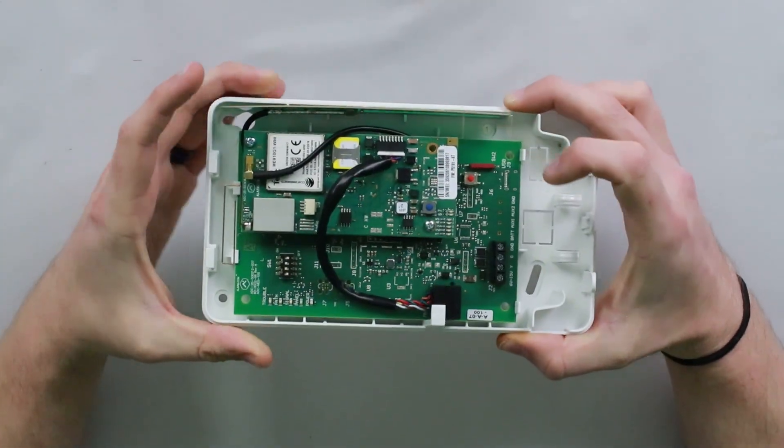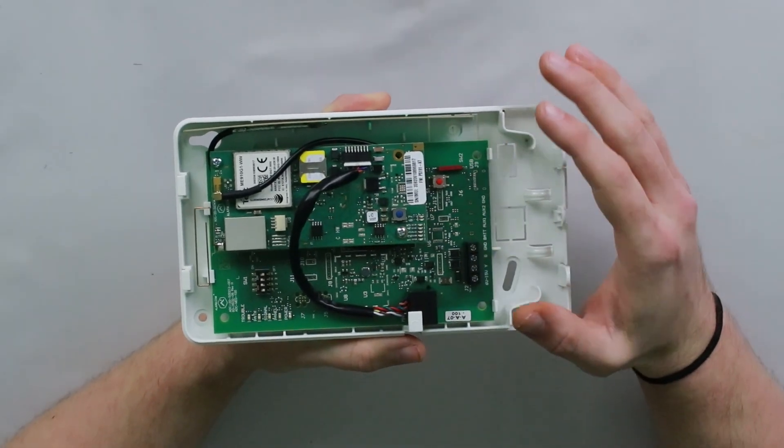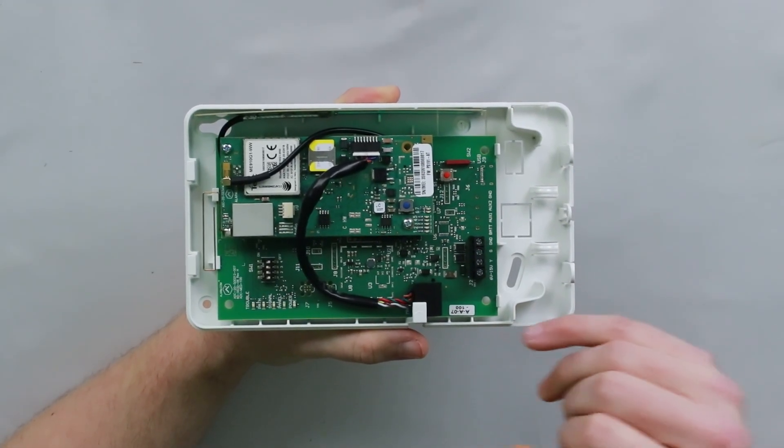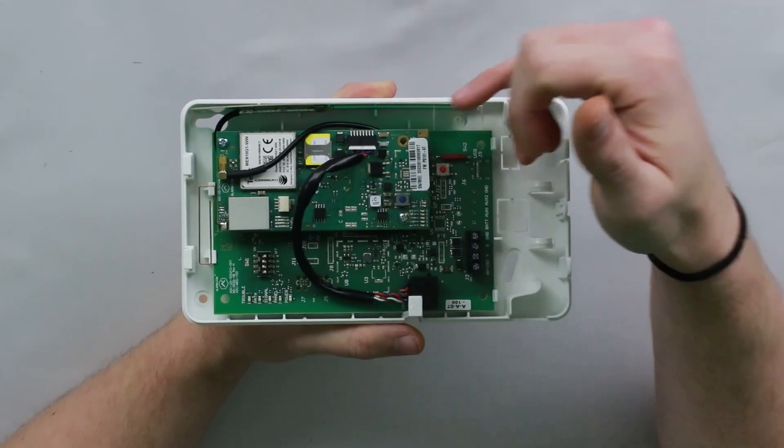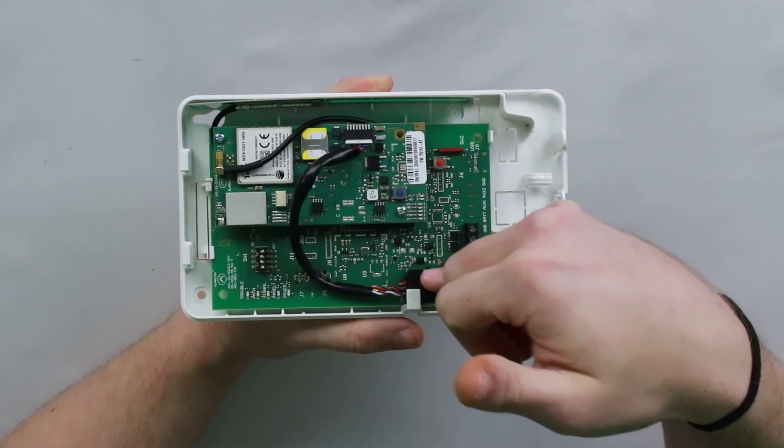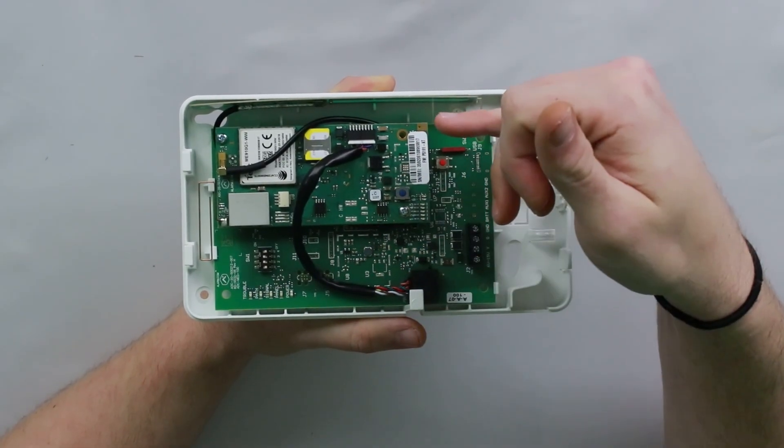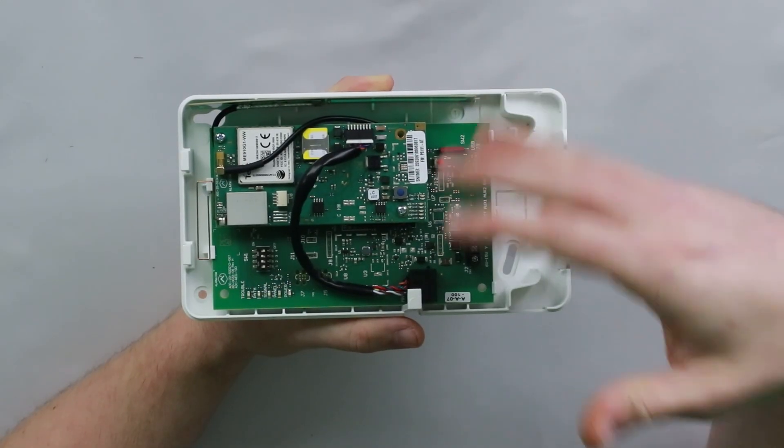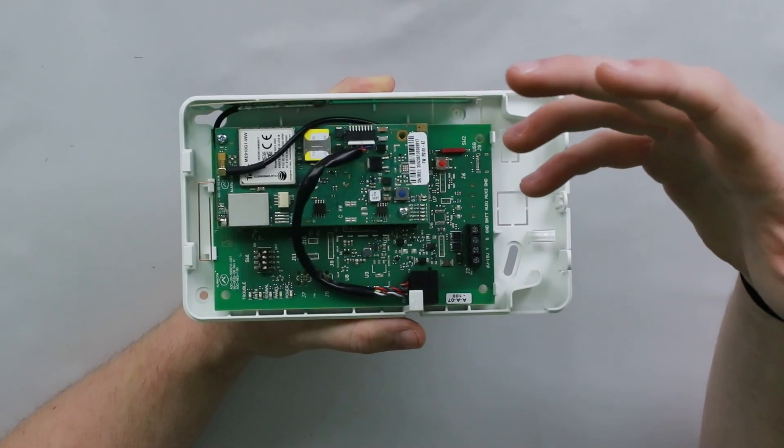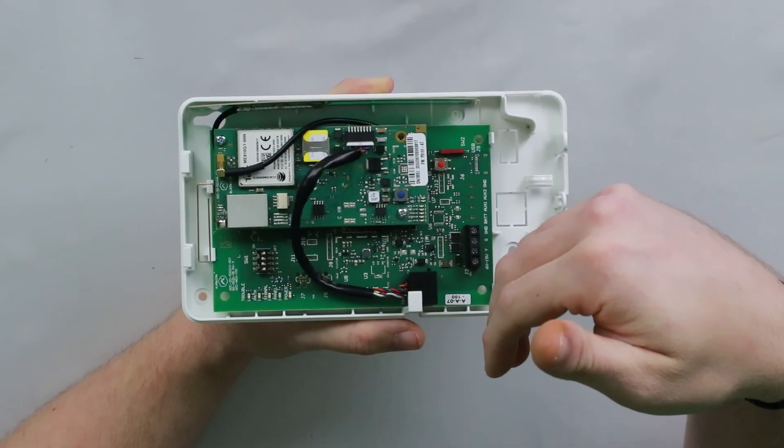Now, with this particular type of module being dual path, generally, you don't get FTCs on these, because the way they are designed to work is they have a primary path, in this case, it is cellular, and they have a secondary path, which is going to be internet in this case. Basically, if one fails, it goes to the other. Now, if by chance, both are out for whatever reason, you will get an FTC, and basically, you just need to fix one or the other to make it communicate again.